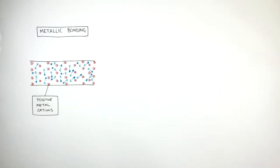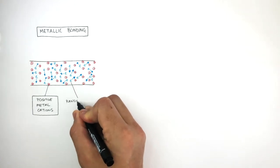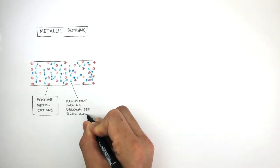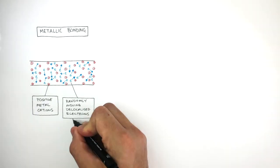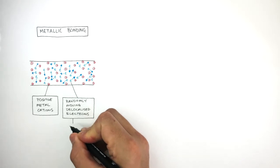The small blue e's with arrows in random directions represent the randomly moving delocalized electrons. There are billions and billions of electrons moving at any one point.